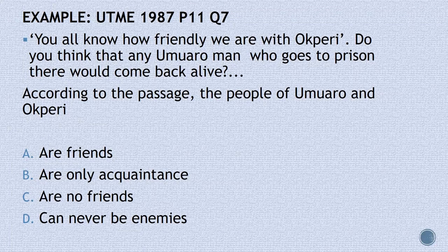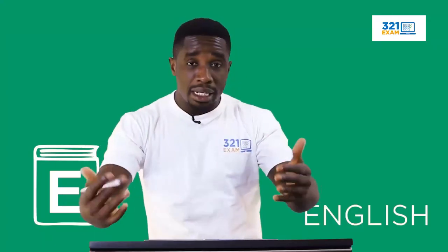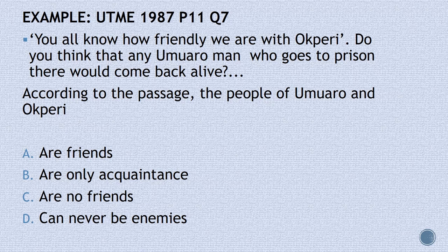Taking a look at a past question — JAM 1987, passage 2, question 7 — the writer said: 'You all know how friendly we are with the Okwere people. Do you think that any Umaru man who goes to prison there will come back alive?' The question asks: according to the passage, the people of Umaru and Okwere are — A: our friends, B: our only acquaintance, C: our no friends, D: can never be enemies.